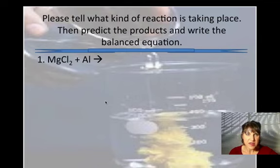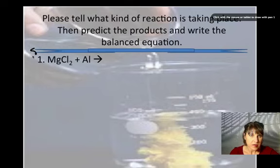I have a compound, magnesium chloride, reacting with an element, aluminum. And so we call this single replacement reaction. So I'm going to make a note of that. This is single replacement.